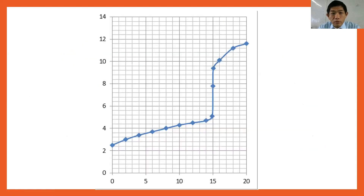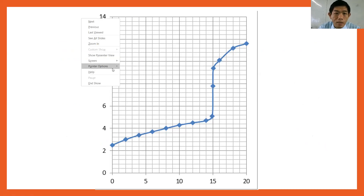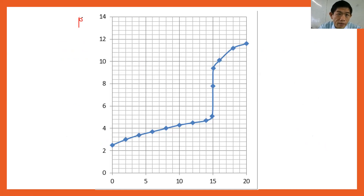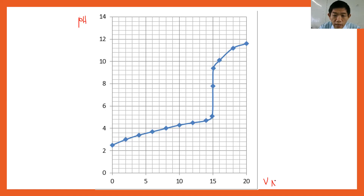For part B, based on the table, plot the graph. You expect your graph to look like a typical titration curve. Remember to label your axes: pH on the y-axis and the volume of sodium hydroxide on the x-axis. Usually, if there are three marks for the graph, the first mark goes to the axes, the second mark goes to the plotting, and the third mark goes to the curve. This is how you secure the three marks for the graph.